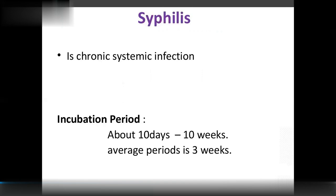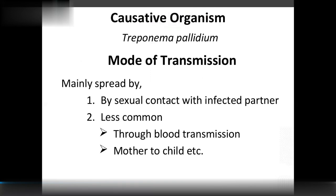Syphilis is a chronic systemic infection. The incubation period is 10 days to 10 weeks, with an average period of 3 weeks. The causative agent is Treponema pallidum. Mode of transmission is via bisexual contact with an infected partner, and less commonly through blood transfusion or mother to child.